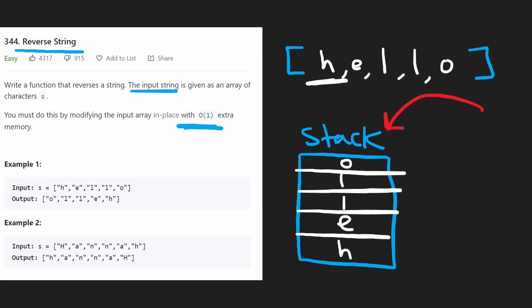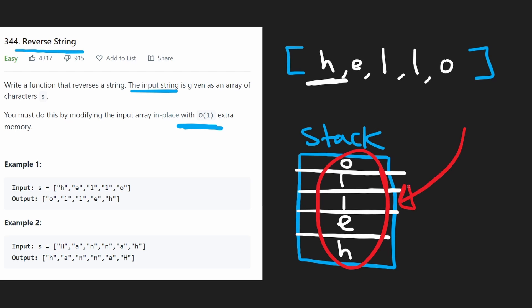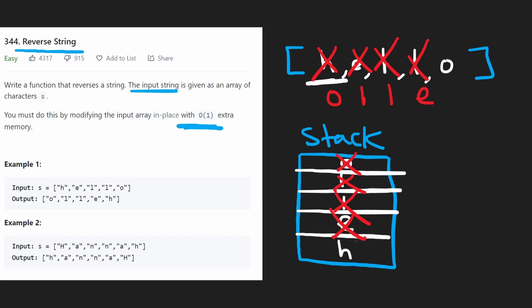A stack data structure can only remove elements from the top. But notice what we did — we already reversed the string. The only problem is it's on the stack, and we actually want it to be in the string. So we're going to pop from the top of the stack — the O — and take the first position of our string and replace it with O. Then we just keep doing that: pop the L, replace the next position; get the second L, then the E, then the last character H. As you can see, we did reverse the string.